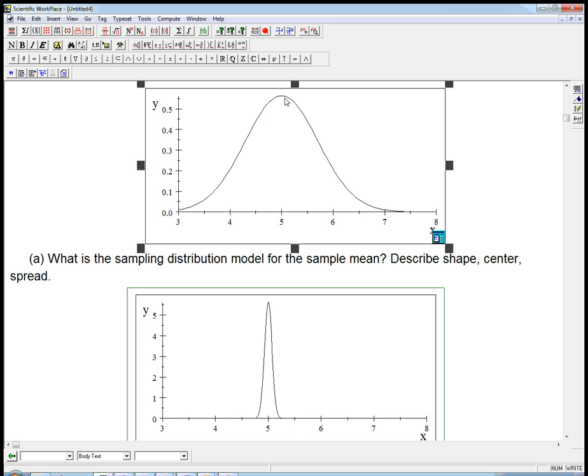What do we expect for the center? I've put this one so it's centered at 5. If that's the mean of the population, we definitely expect the mean of the sample to also be equal to 5. The variability, the spread, is going to be decreased.